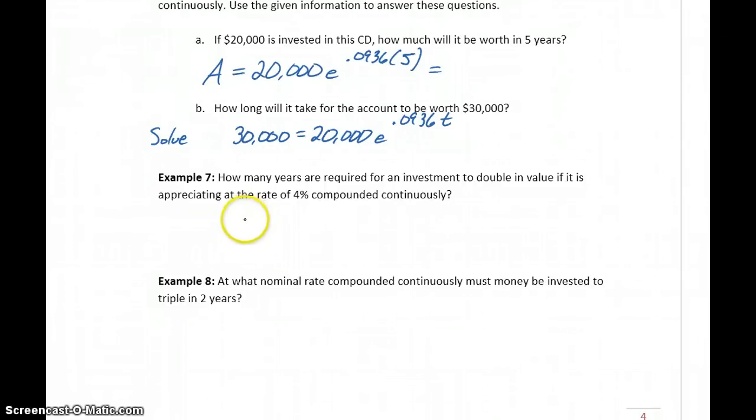So in this case, we know that we have some initial amount that we would invest times e to the interest rate, 0.04, times some amount of time. And what we're told is we want that original investment to double. So we would need to solve with our final amount being 2 times p. Because that's twice that original investment. And what we'd see here is that those p's would cancel. So what we're solving is 2 equals e to the 0.04t.